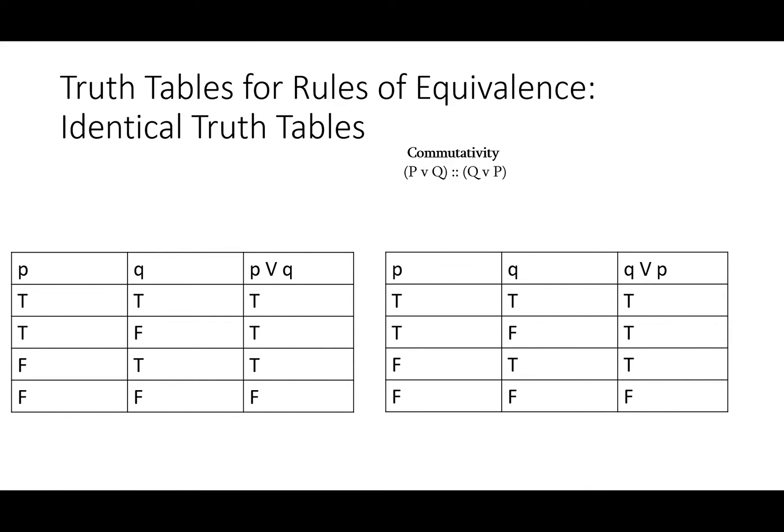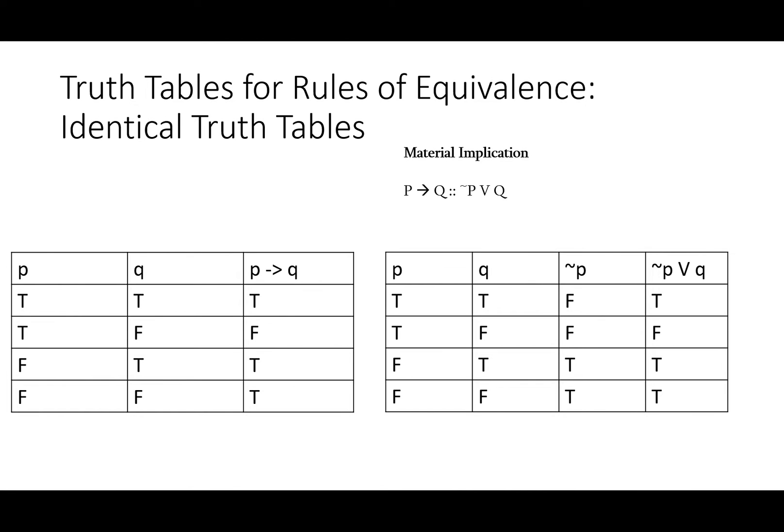For rules of equivalence, however, we're looking for identical truth tables, or rather identical columns in a truth table. P or Q and Q or P pretty clearly both come out true, true, true, false. It's not very surprising to see that these two things are logically equivalent. In fact, this is one of the most frequently skipped rules on proofs, so don't skip it. Material implication, however, that we'll learn next time is a little bit less intuitive. So let's take a careful look at it.